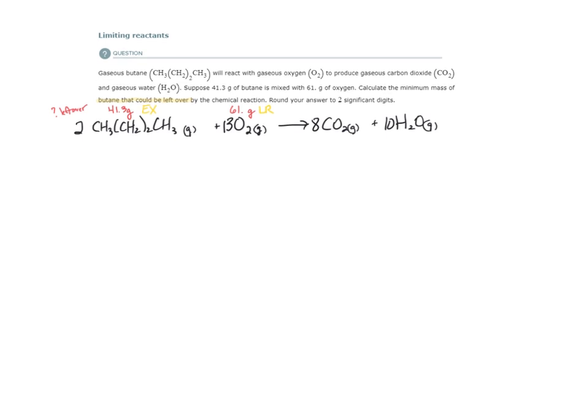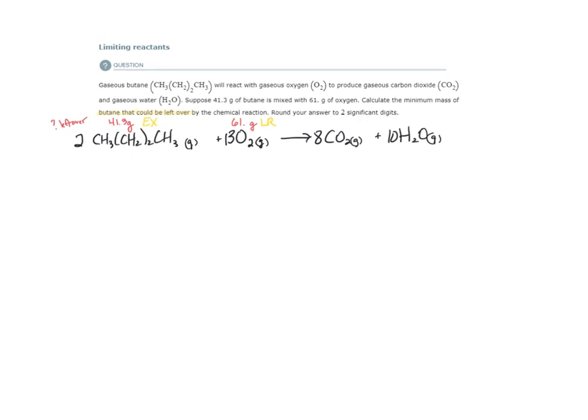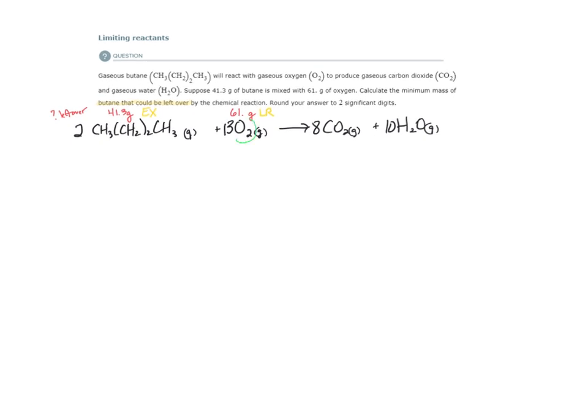So what we're doing is we are converting from this to that. We're converting from an amount of oxygen, and we're going to convert to an amount of butane. Now, what that amount is going to be is how much butane is required to react with all of this oxygen. So the amount of butane that we're going to get to react with all this oxygen should be less than 41.3 grams. So we're going to see how much less.